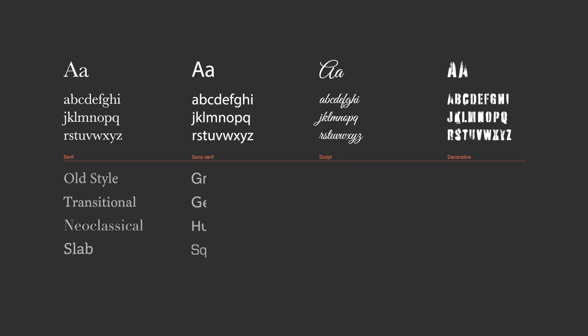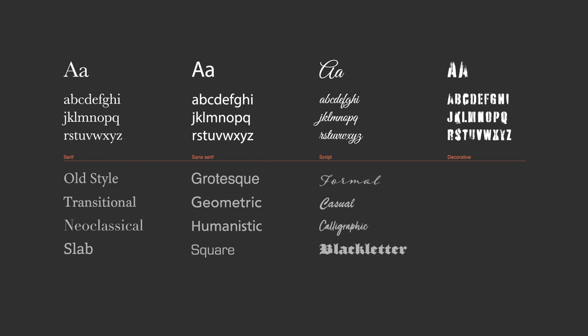For example, serif type styles can include old style, transitional, neoclassical, and slab. Sans-serif typefaces can include grotesque, square, humanistic, and geometric.